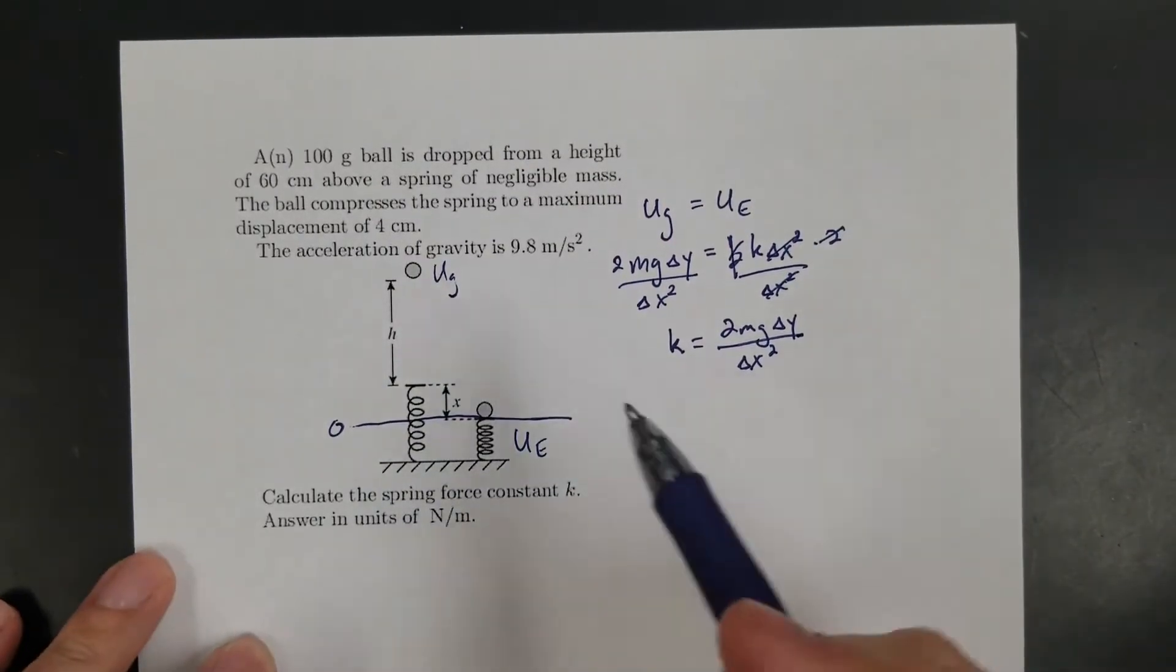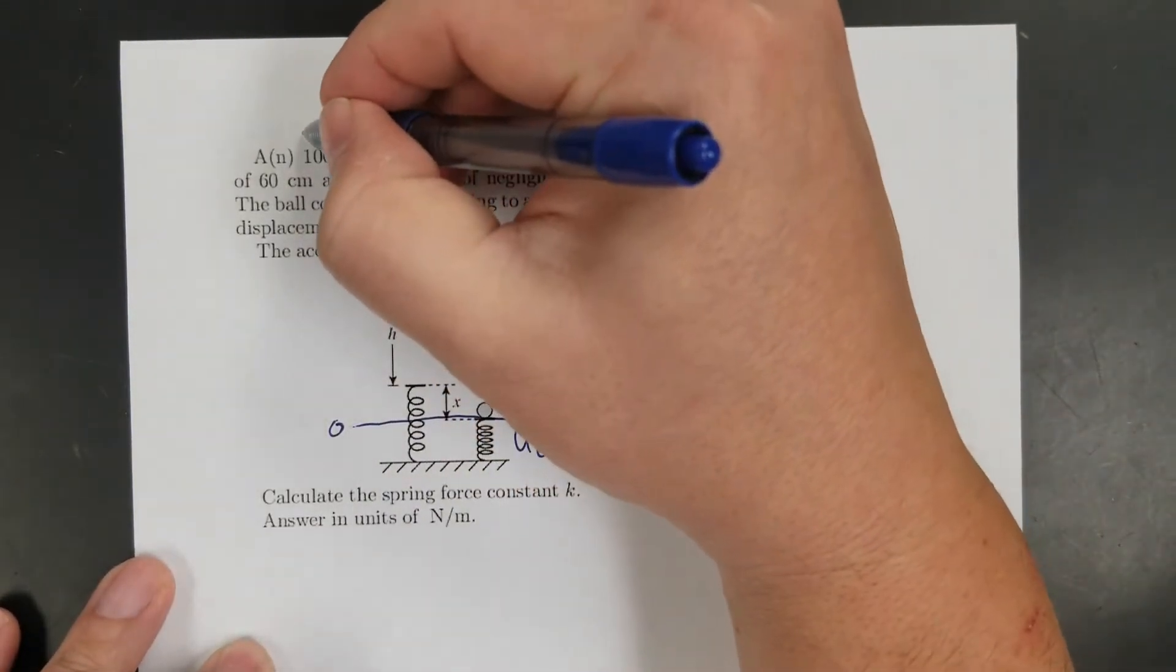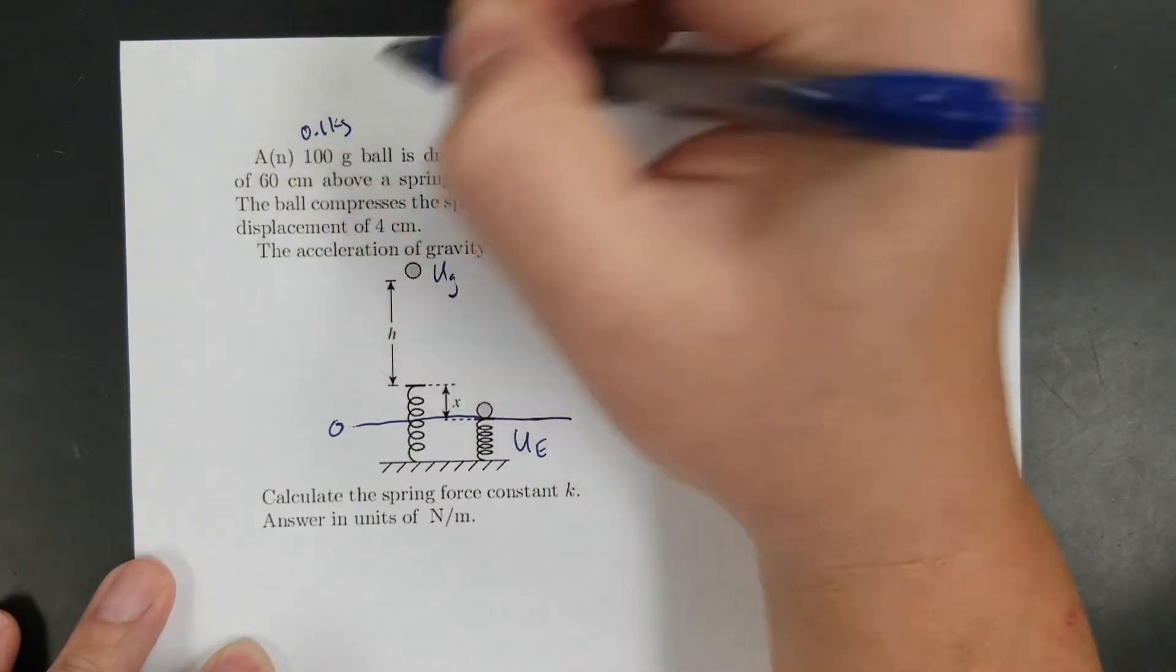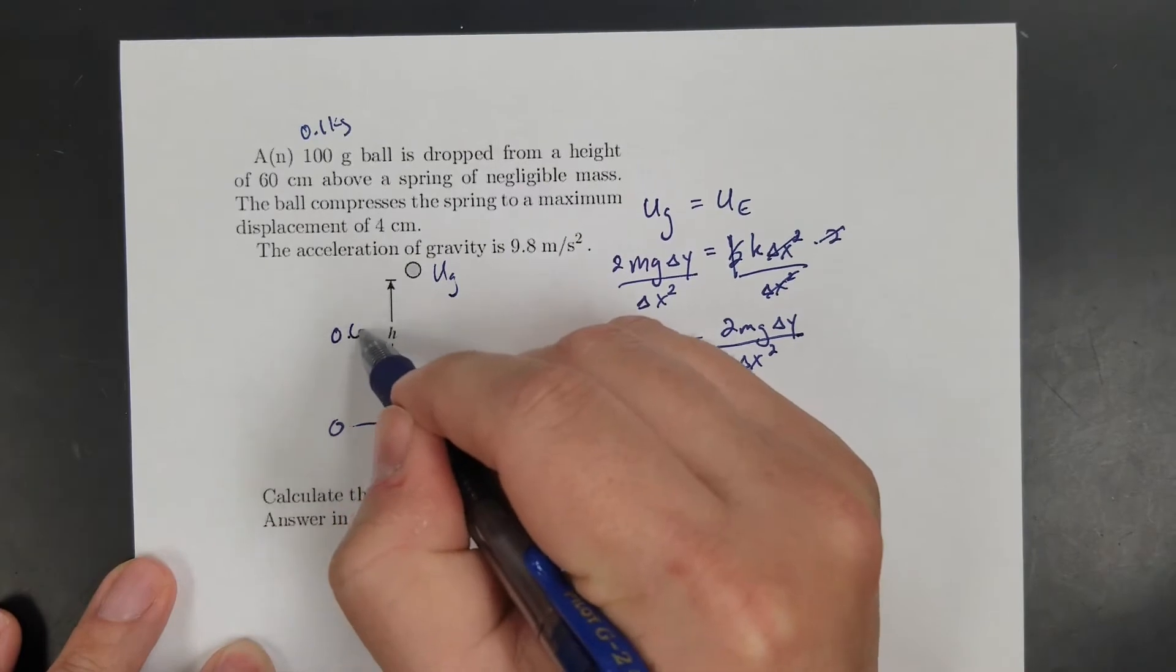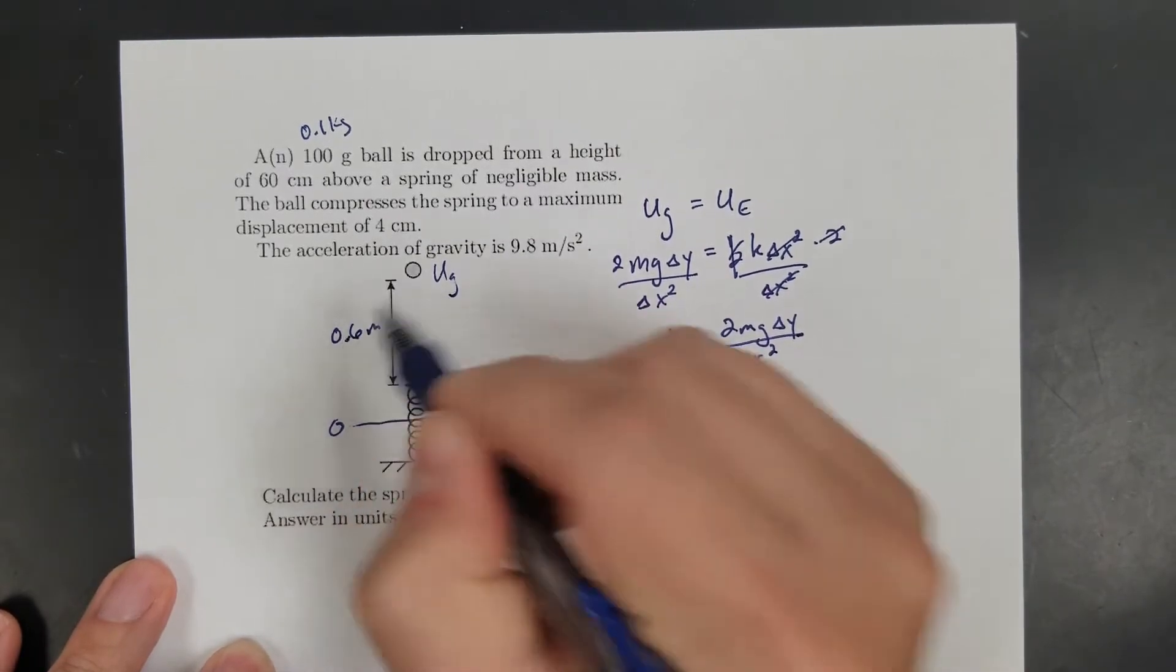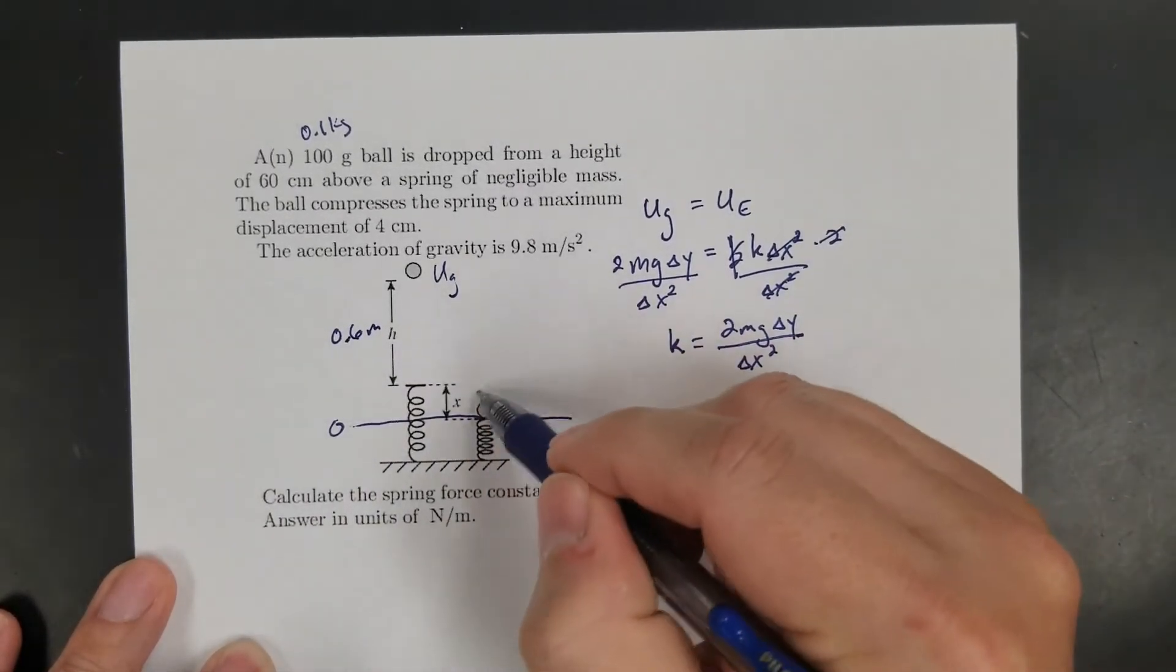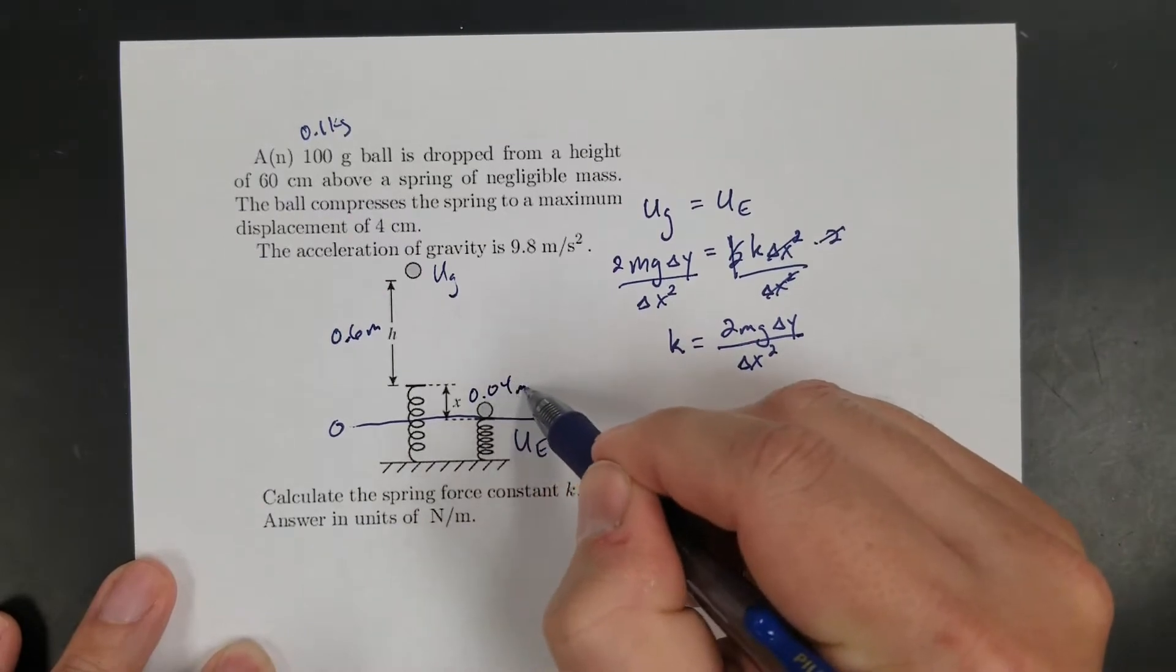I've got numbers that aren't in base units. 100 grams, that's 0.1 kilograms. 60 centimeters, so this is 0.6 meters. And then this one is 4 centimeters, so that's 0.04 meters.